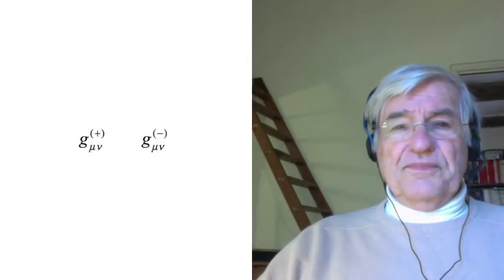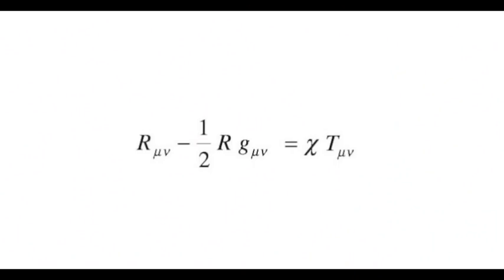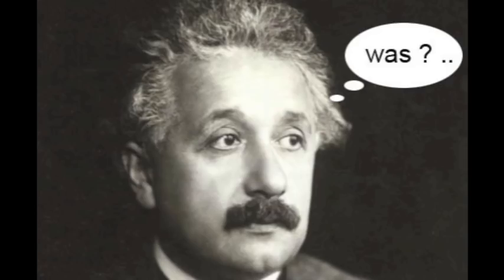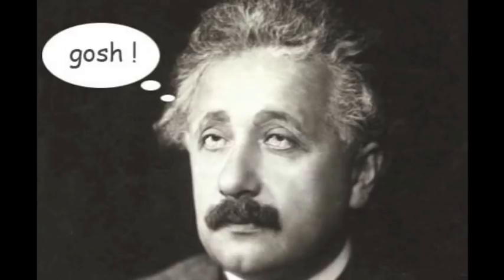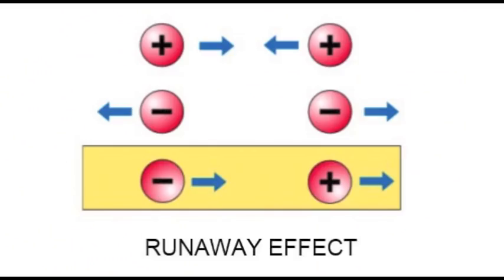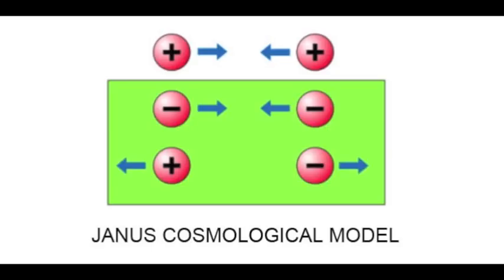If we want to change that, we have to deal with two different metrics: G-plus mu-nu and G-minus mu-nu. To do that, we have to shift from a single field equation — the Einstein equation — to a system of two coupled field equations, the Einstein equation being one of the two. Consider the interaction schema derived from the Einstein field equation. Suppose we want to shift to a new interaction schema: positive masses mutually attract, negative masses mutually attract, and masses with opposite signs mutually repel.